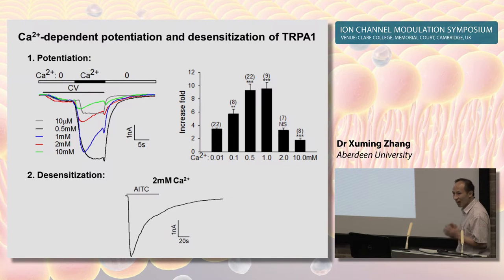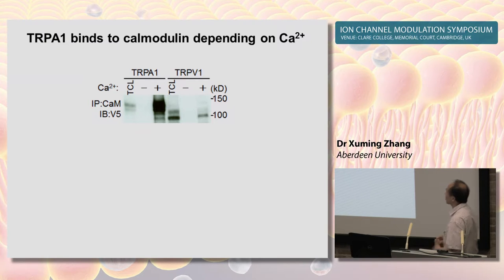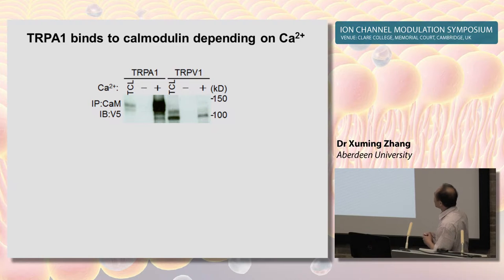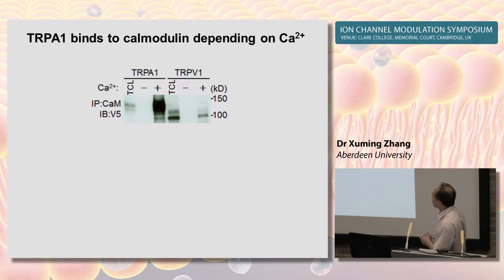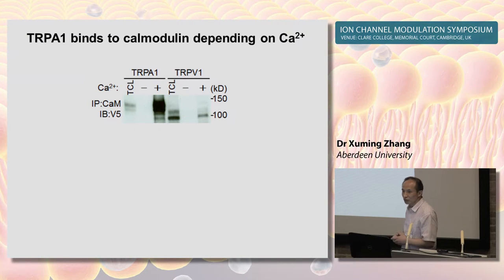The central question is how calcium works. Calmodulin is a well-known calcium-sensing protein and has been involved in regulating many TRP channels such as calcium-activated TRP channels. We therefore wondered whether calmodulin is the calcium-sensing protein that modulates TRPA1 through binding to the channel. To test this hypothesis, we first tested whether TRPA1 binds to calmodulin using a calmodulin pull-down assay. In the absence of calcium, calmodulin did not pull down TRPA1. However, a significant amount of TRPA1 was pulled down by calmodulin in the presence of calcium. As a positive control, calmodulin also pulled down TRPV1, a TRP channel already known to be regulated by calmodulin.